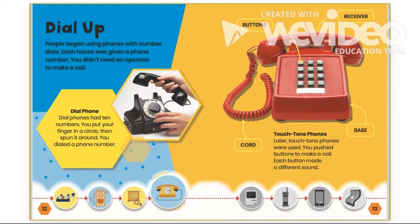People began using phones with number dials. Each house was given a phone number. You didn't need an operator to make a call. Dial phones had 10 numbers. You put your finger in a circle, then spun it around to dial a phone number.